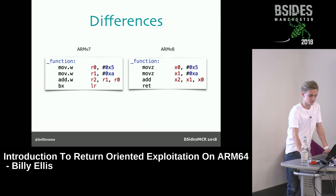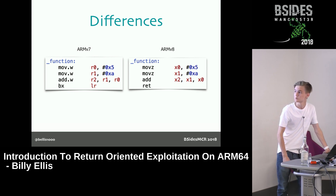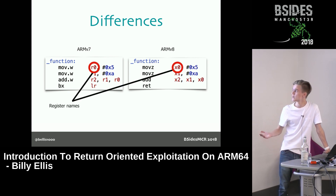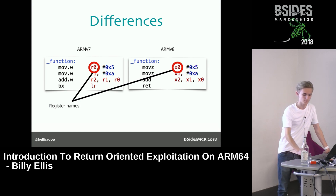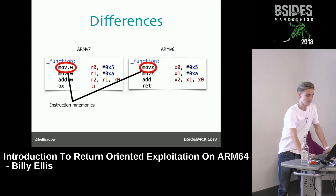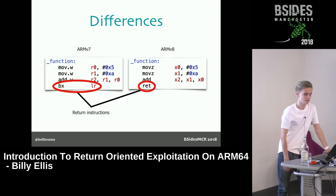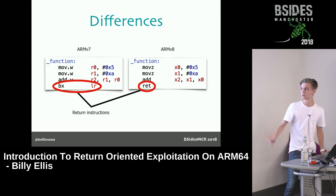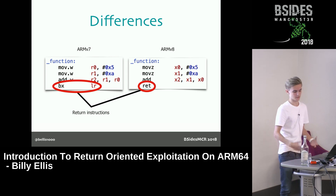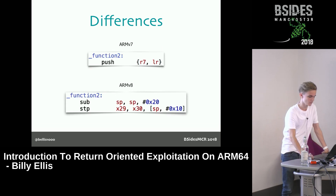Here are a couple of illustrations to demonstrate the differences between these two instruction sets. You can see the differences in the register names — both these small functions do the same thing. Instruction mnemonics vary slightly. With ARMv7 we have a branch to the link register instruction. ARMv8 actually has a RET, which does the same thing.